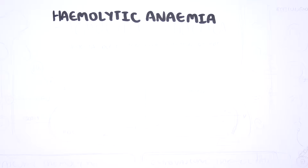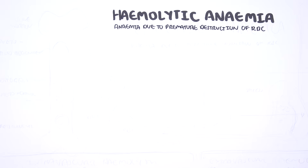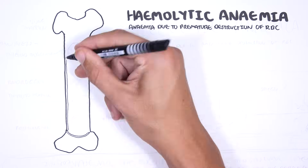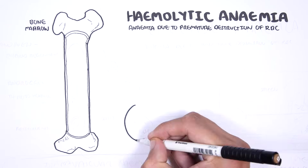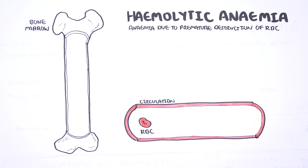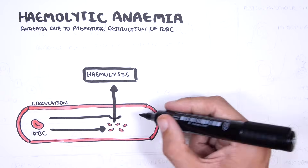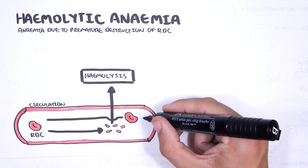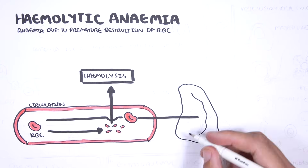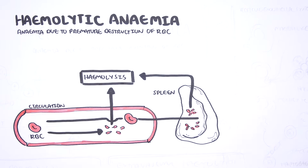Hemolytic anemia is defined as anemia due to premature destruction of red blood cells. Red blood cells, also known as erythrocytes, are produced in the bone marrow and then enter circulation to become mature. The mechanism of red blood cell hemolysis can be intravascular, meaning destruction within the vasculature, or extravascular, occurring outside the vasculature, typically in organs such as the spleen and liver, where the reticuloendothelial system resides.